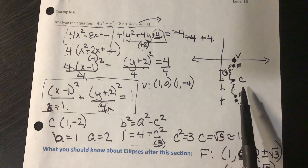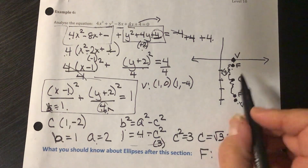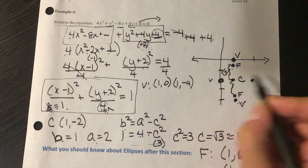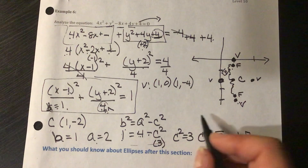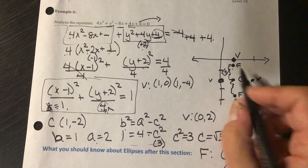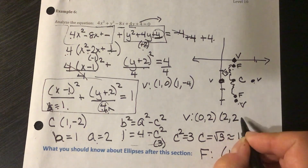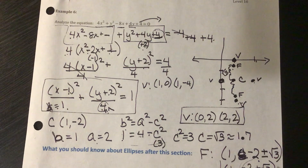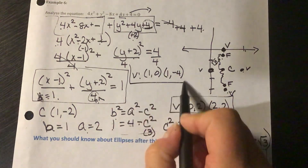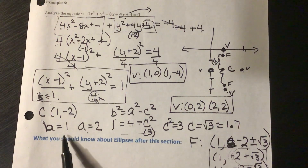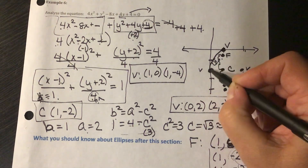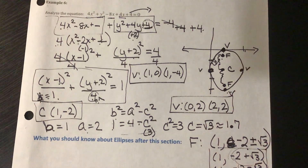The b value is 1 unit, so from the center I go 1 unit left and right; these are the minor axis vertices at (0, -2) and (2, -2). With everything identified — center (1, -2), major axis vertices, minor axis vertices, and foci — I can connect the dots and draw the ellipse.